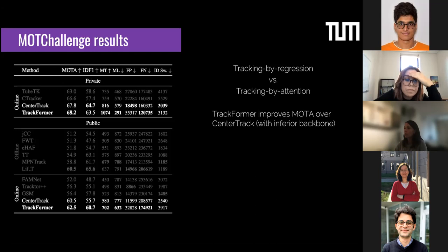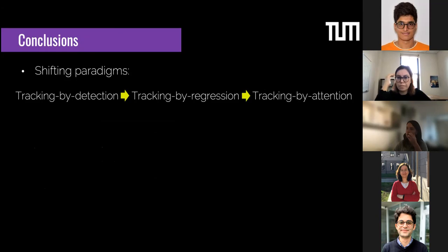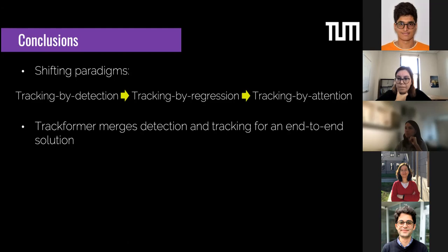Comparing to other state-of-the-art trackers, the tracking-by-attention paradigm is more powerful than tracking by regression. Compared to CenterTrack, which has a superior backbone, TrackFormer shows a nice performance boost. Especially on public detections, TrackFormer's capability of keeping identities is much superior to CenterTrack. Overall, we've moved from tracking by detection through tracking by regression and now hopefully to tracking by attention, with TrackFormer offering an end-to-end solution that merges detection and tracking even further.